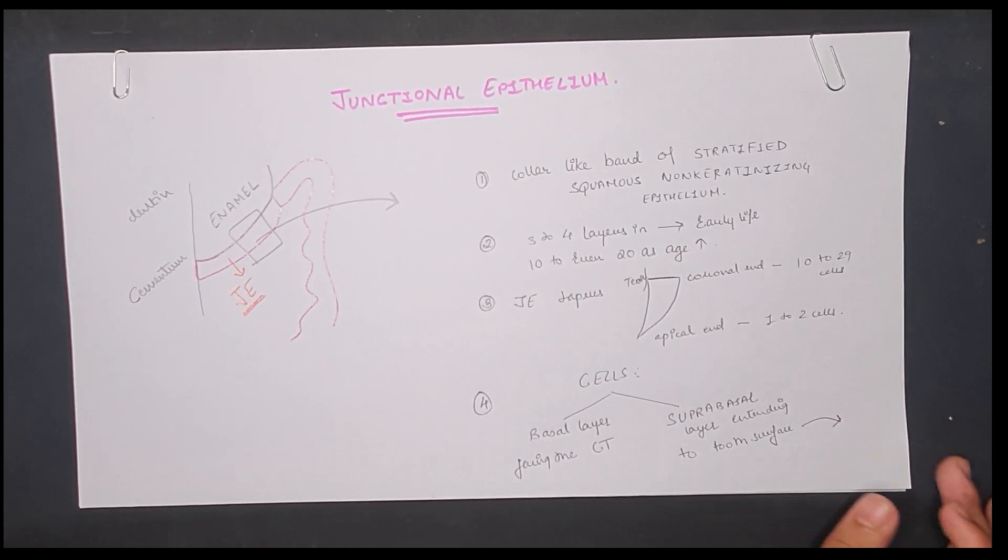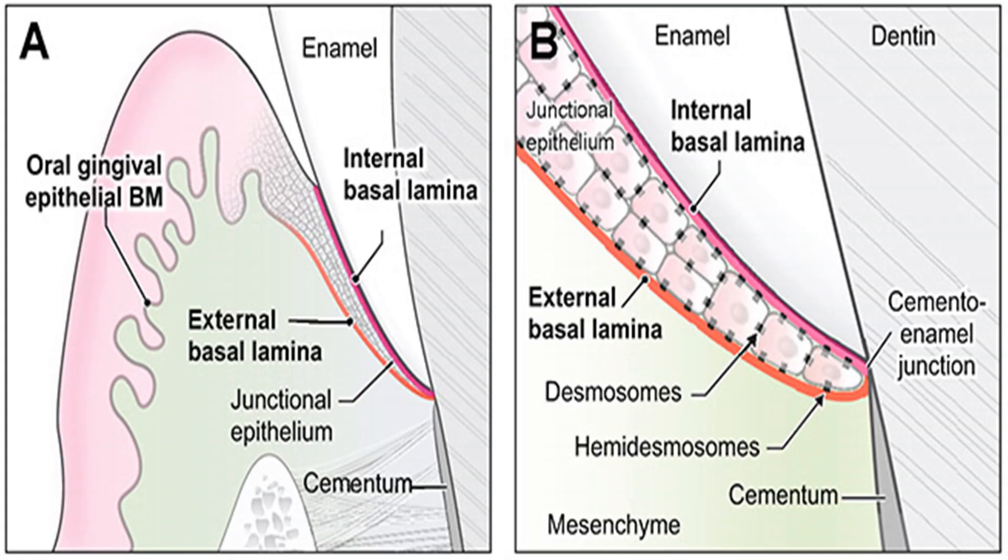Let's discuss the image. As you can see, this shows the internal basal lamina and an external basal lamina of the junctional epithelium which is attached to the enamel and the cementum. The internal basal lamina and external basal lamina have hemidesmosomes which help in the junctional epithelium attaching to the enamel and cementum.